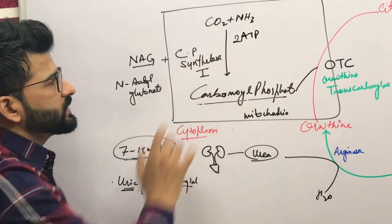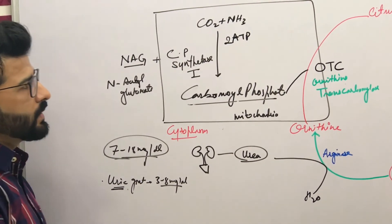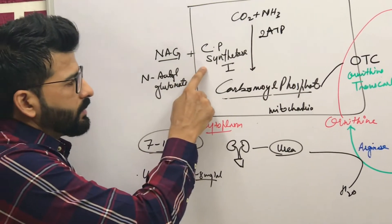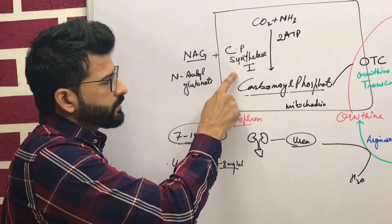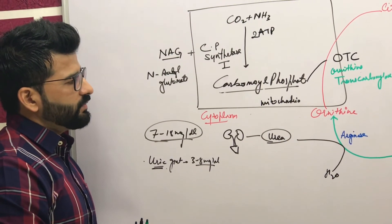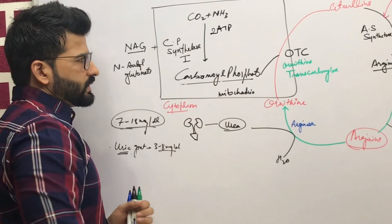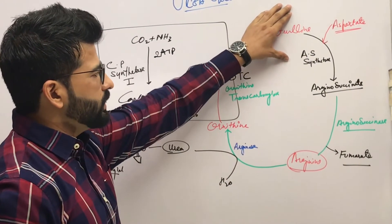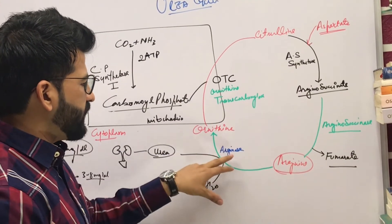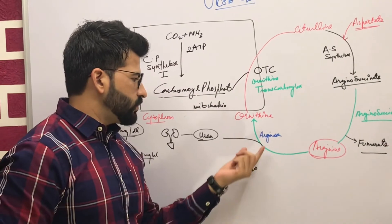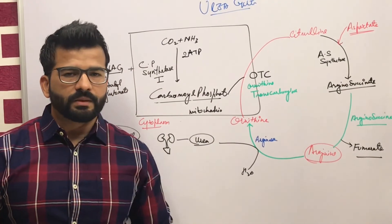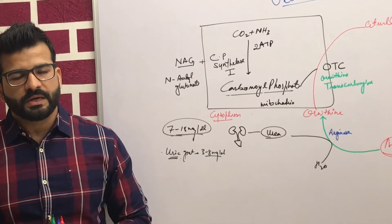In summary, CO2 and NH3 are converted to carbamoyl phosphate in the mitochondria by carbamoyl phosphate synthetase 1, with N-acetylglutamate as a cofactor. Carbamoyl phosphate combines with ornithine to form citrulline, citrulline converts to argininosuccinate, then to arginine, and when arginase converts arginine to ornithine, H2O is added and urea is formed, which is excreted by the kidney. This is the urea cycle, by which protein nitrogen waste is removed from the body.